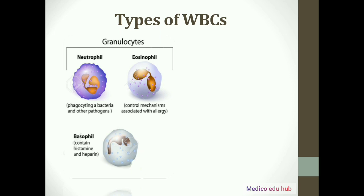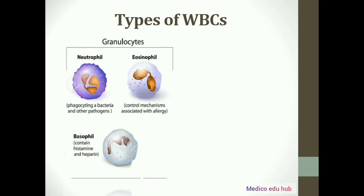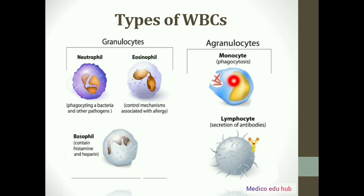We will now learn about the functions of these cells. Neutrophils help in killing bacteria and other pathogens. Eosinophils help in the control mechanism usually associated with allergy. Basophils contain histamine and heparin — histamine is an anti-allergenic agent and heparin is an anti-coagulant. Next is monocytes: the main function of monocytes is phagocytosis, which is a defense process in the body. When a foreign particle enters the body, monocytes engulf those foreign particles so they cannot harm the body.